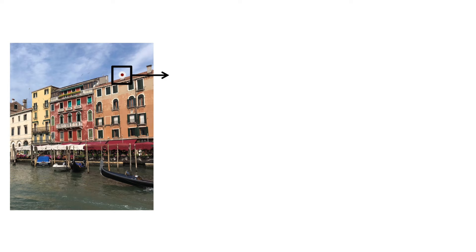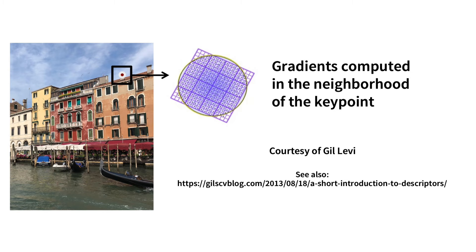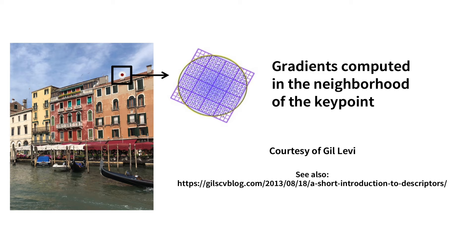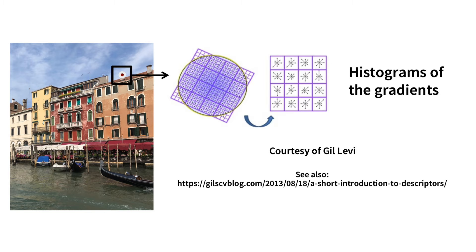The next step is to compute the descriptor vector. You look into the local neighborhood of the key point, break it down into small areas, and compute the gradients in these small areas. Gradients are used because they are typically robust with respect to illumination changes and also certain viewpoint changes. You compute all those gradients and collect them into histograms for local regions — capturing how often certain gradients occur and their magnitude.